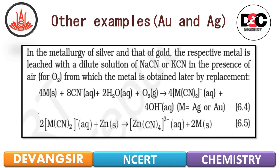Now the other examples: the purification of Au (gold) and Ag (silver). In the metallurgy of silver and gold, the respective metals are leached with the dilute solution of a cyanide salt. For MCQ: if it is silver, sodium cyanide is used; if it is gold, potassium cyanide is used — in the presence of air, that is O2.